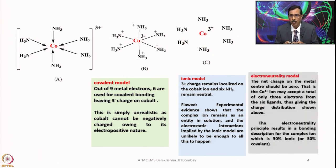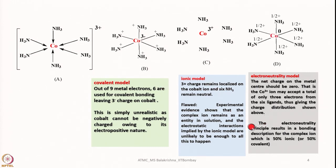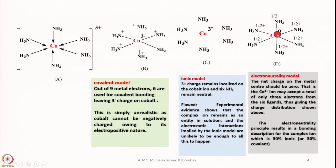Then came the electroneutrality model. What it says is that the net charge on the metal center should be 0, or between +1 and −1 close to 0. So cobalt 3+ may accept a total of only 3 electrons from the 6 ligands. The electroneutrality principle results in a bonding description for the complex having 50% ionic character and 50% covalent character, with the charge on all entities well within +1 to −1 and cobalt carrying 0 charge.